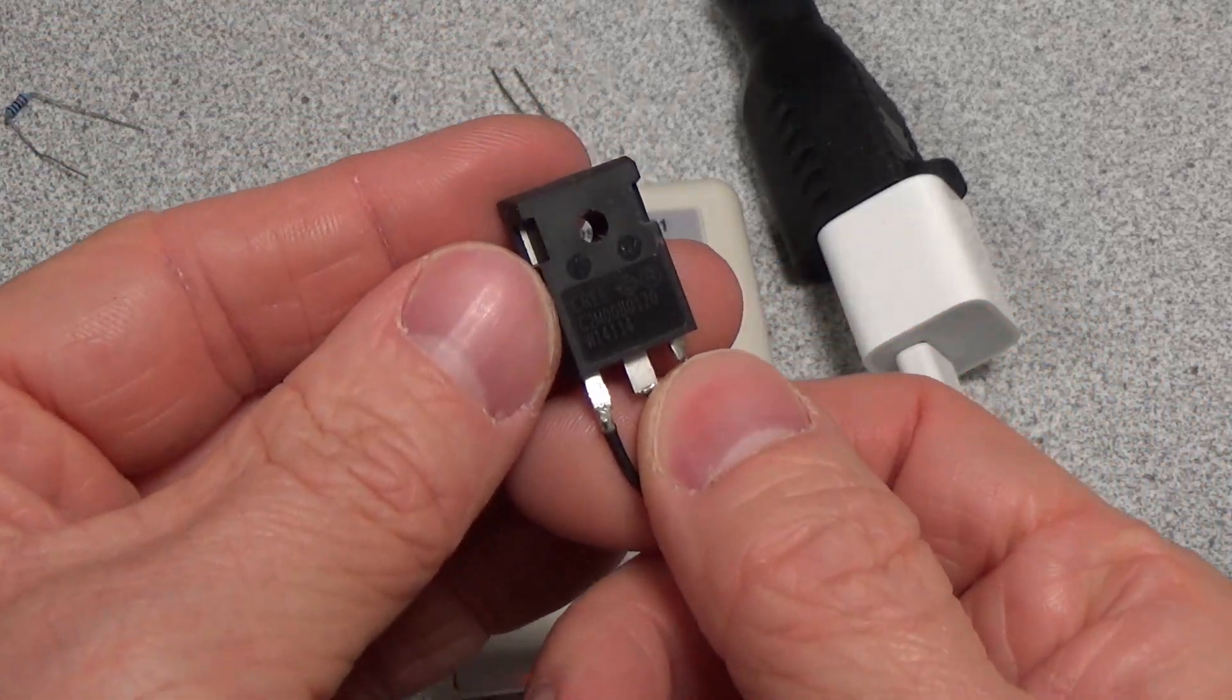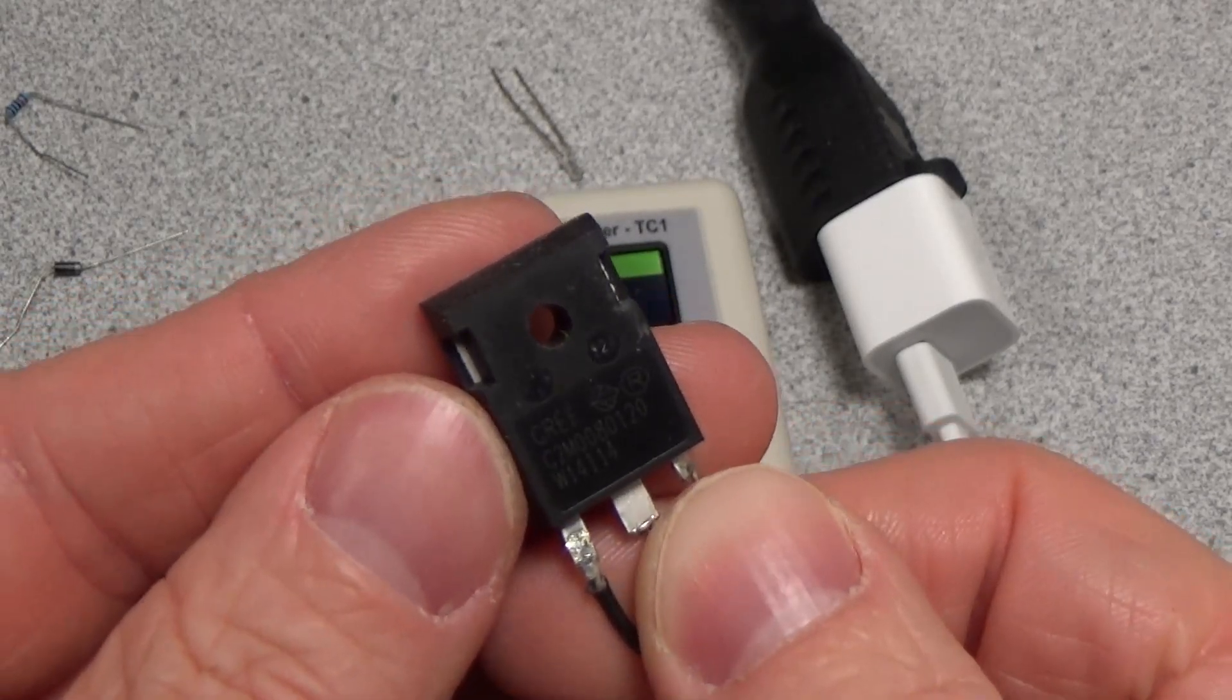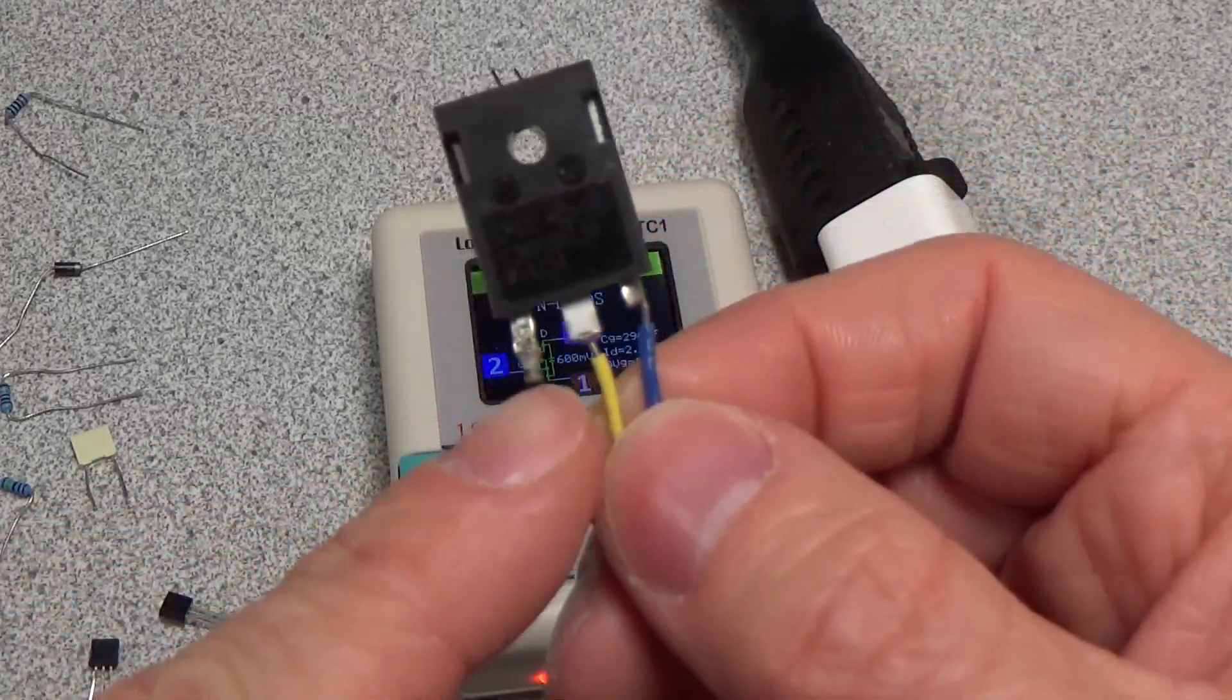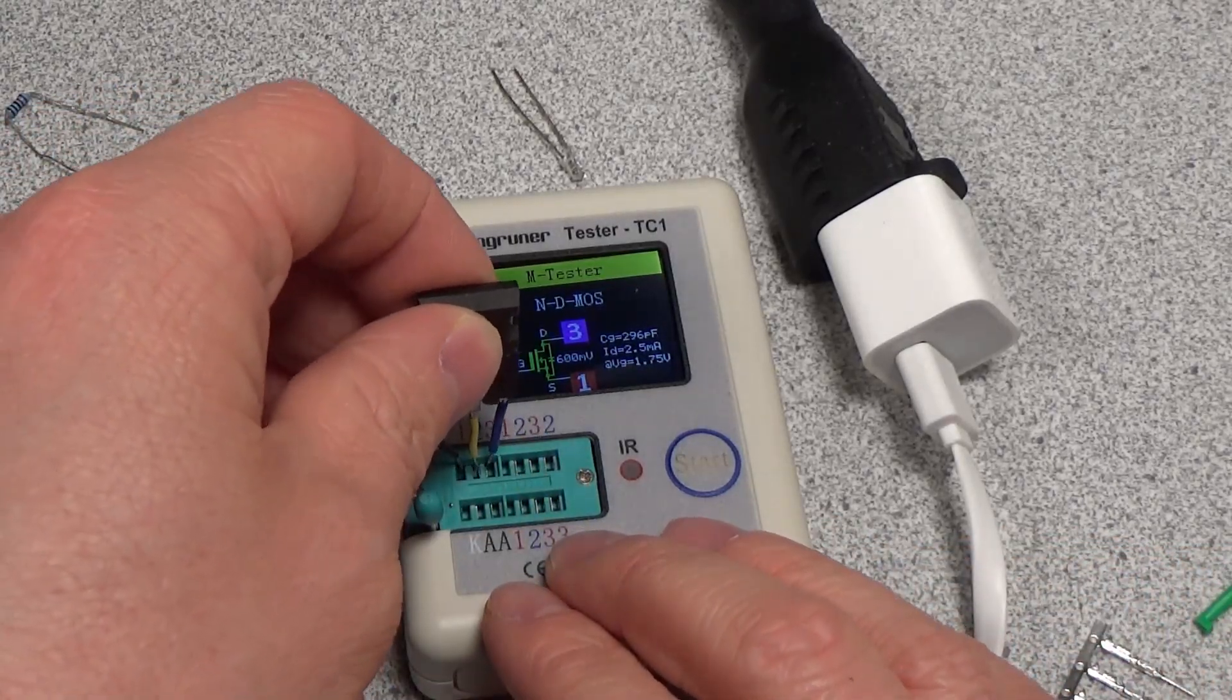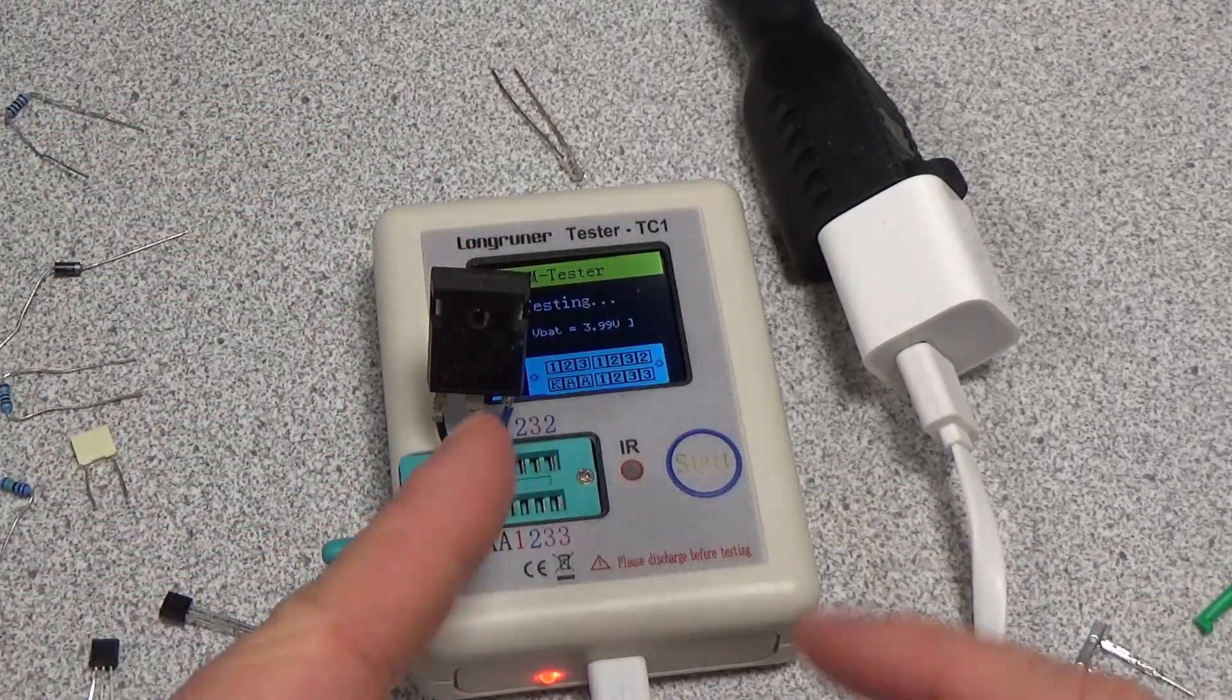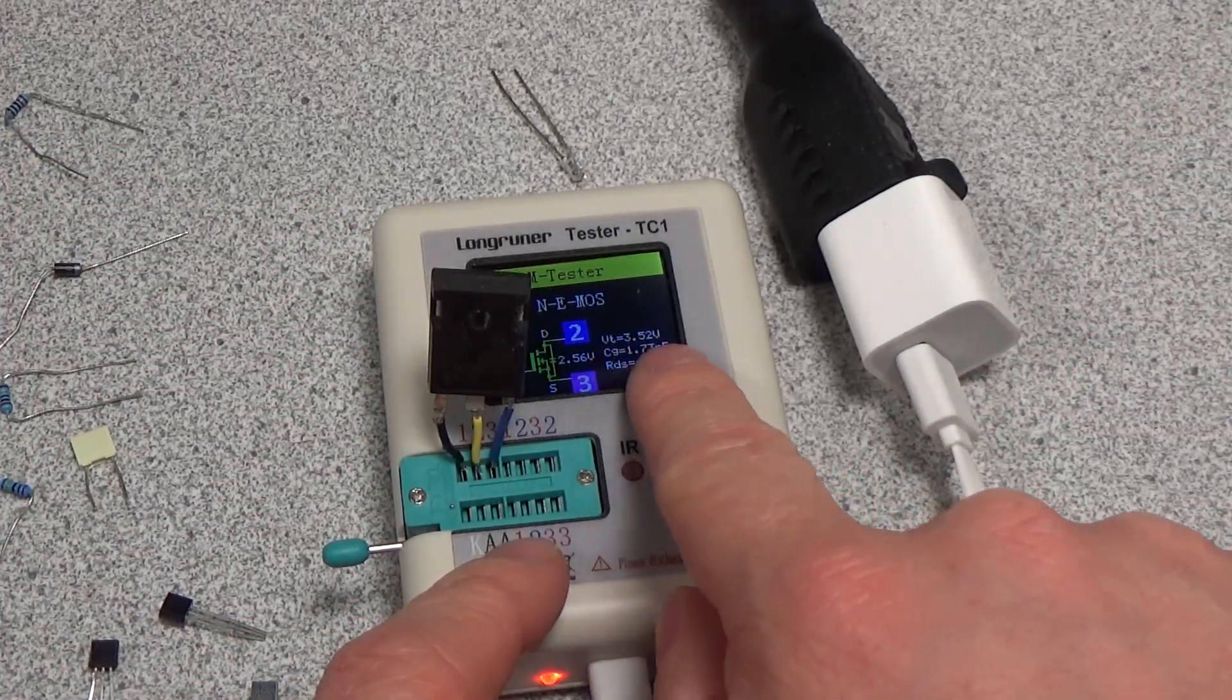So this is a Cree C2M0080120 MOSFET. So this is a silicon carbide MOSFET and it's obviously been hacked apart here, but this is a high band gap semiconductor and so it uses a lot more voltage to be enabled. But let's see if this device can test it. No problem.